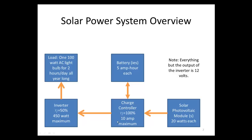In our system we also have something called a charge controller. What a charge controller does is make sure that the battery is not too overloaded or too drained, because batteries don't like to be overcharged or undercharged. It's really the decision maker of the solar power system. We're going to use 100% efficiency for the charge controller — normally it's around 80% to 90% — but for simplicity we'll use 100%. The charge controller provides 10 amps maximum amperage, just like the inverter has an upper limit rating.